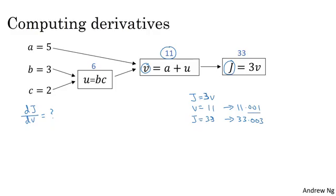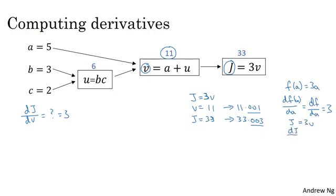So here, we've increased v by 0.001, and the net result of that is that j goes up three times as much. So the derivative of j with respect to v is equal to 3, because the increase in j is three times the increase in v. This is very analogous to the example we had in the previous video, where we had f of a equals 3a, and so we derived that df/da was equal to 3. So instead, here we have j equals 3v, and so dj/dv is equal to 3, with j playing the role of f, and v playing the role of a.